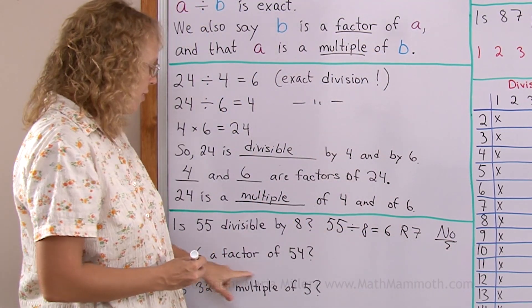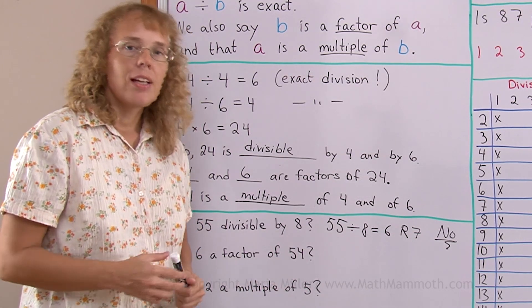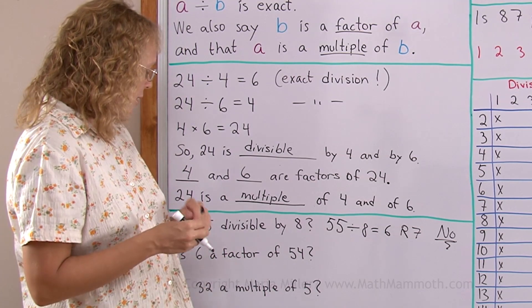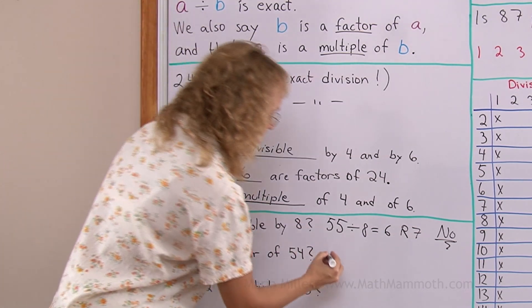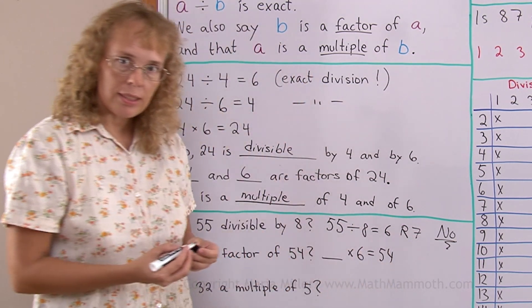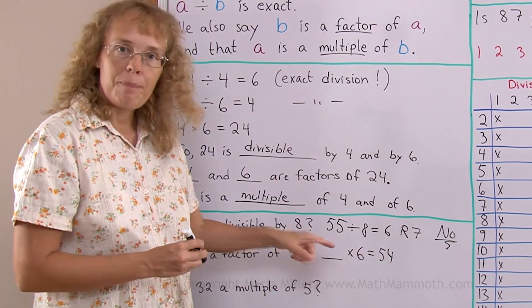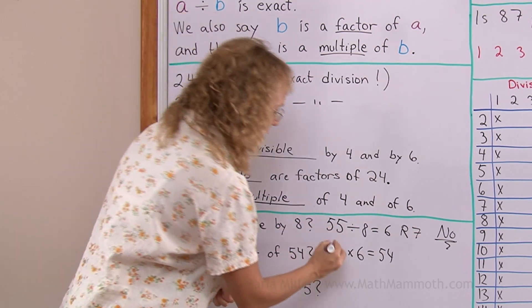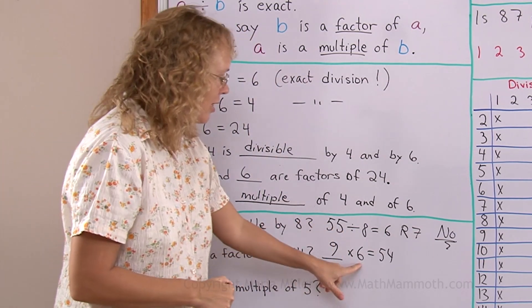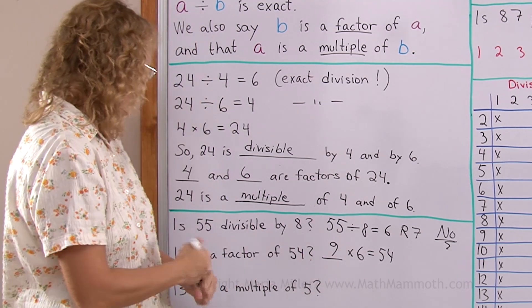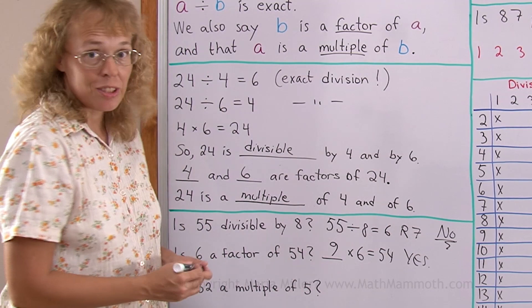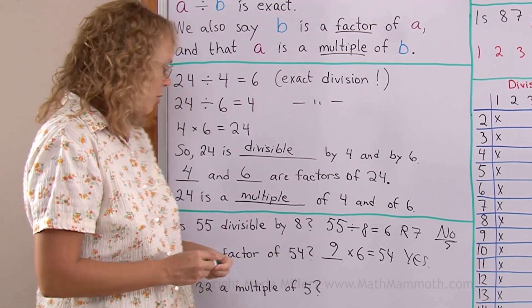Is 6 a factor of 54? Now can I write something times 6 equals 54? Can I do this? Find a number here? Yes I can. 9 times 6, right? So here I have now a multiplication and 6 is a factor here. So yes, 6 is a factor of 54. And so is 9. 9 is a factor of 54 too.